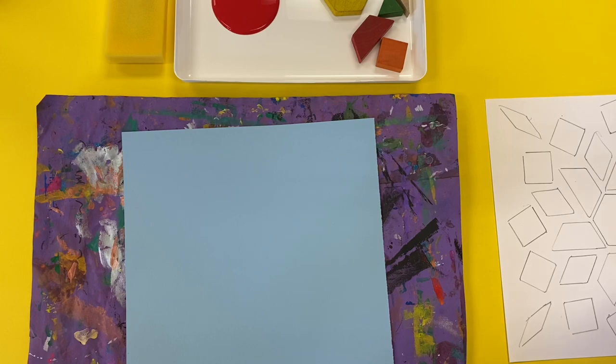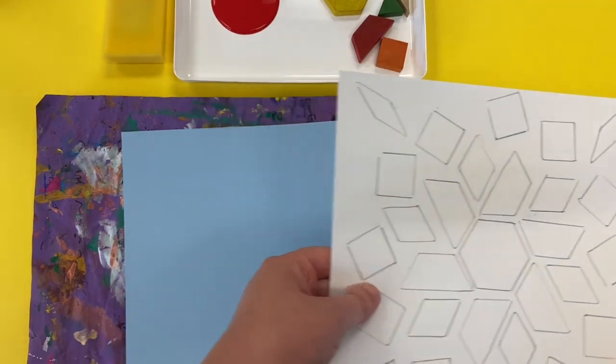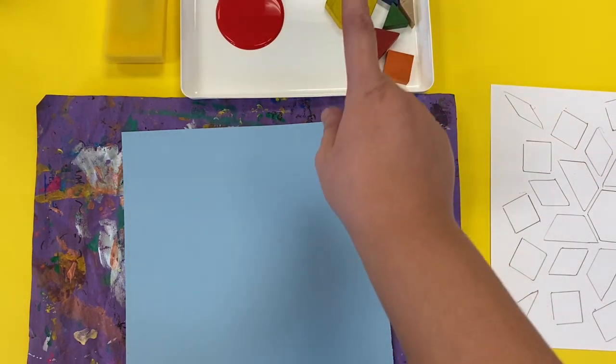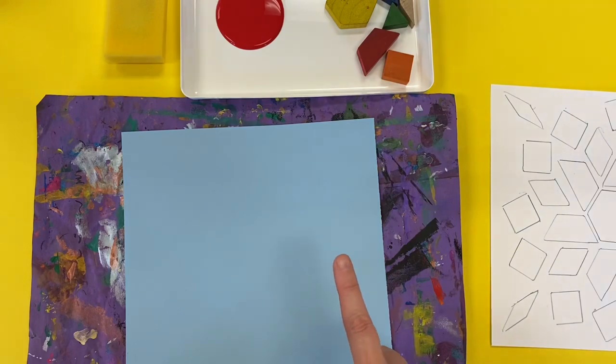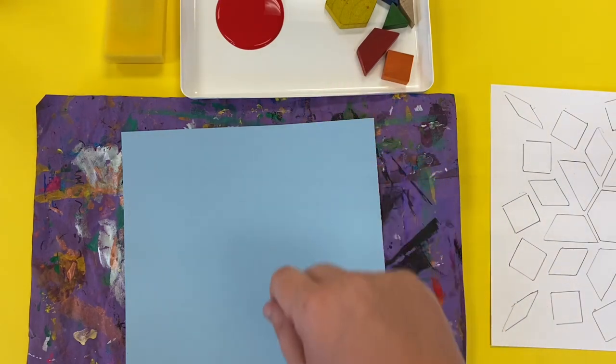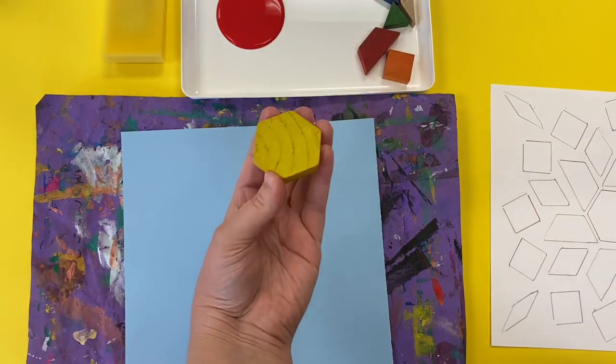The first thing I noticed is that my first shape that I drew was right in the middle. I'm going to find that shape in this tray and you're going to be sharing this tray with your partner who's sitting across from you at your table. Make sure you keep the tray in the middle of the table so they can reach it also. I'm just going to pick up the shape that I need.